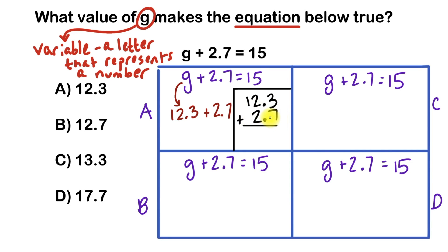Now when I add these up, I get 7 plus 3, which is 10. That's a two-digit number. So I'll bring down my 0 and I'll carry the 1 here. And I'll make sure I put my decimal point here underneath my other decimal points.